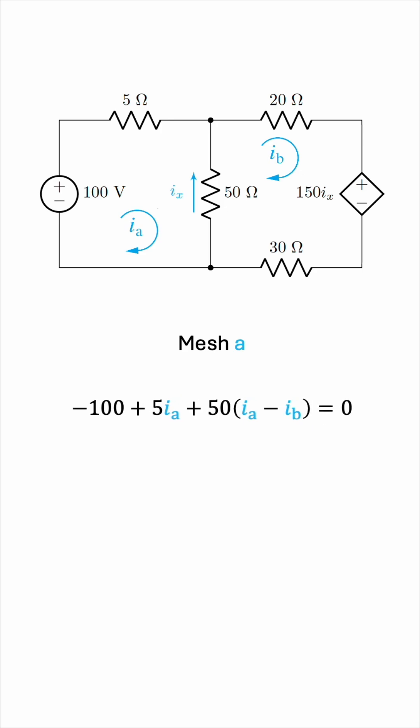Let's divide everything by 5, and take the constant to the other side. We can expand the pair of brackets and group like terms. So that's it. This is the first equation involving Ia and Ib.